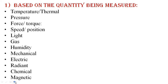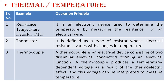These are the physical quantities measured by sensors in the first type. The sensors we need to know include temperature, pressure, force, speed, light, gas, humidity, mechanical, electrical, radiant, chemical, and magnetic. These are all the physical quantities being measured by sensors in the first classification type.